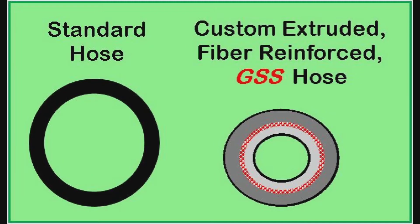We invented and patented a simple solution to this excess gas causing a high flow rate gas blast at each weld start. It utilizes a custom extruded small-ID, large-OD gas delivery hose. The system cuts the excess gas by 80 to 85 percent.